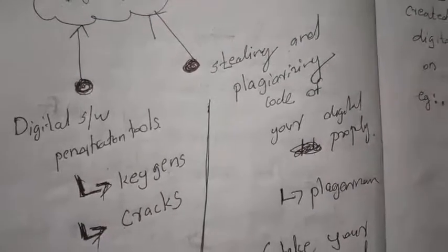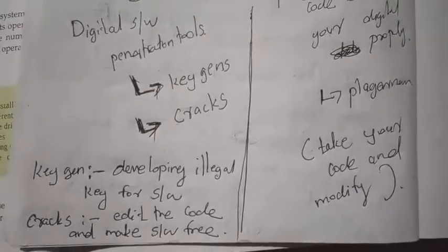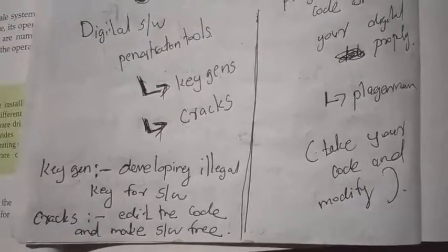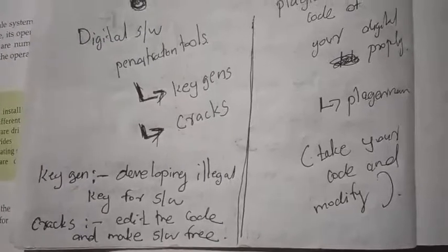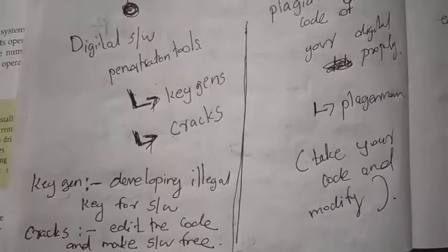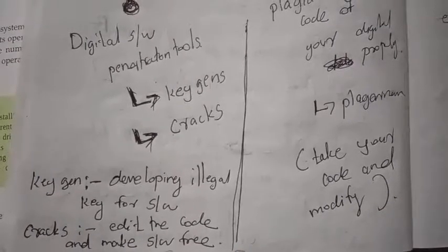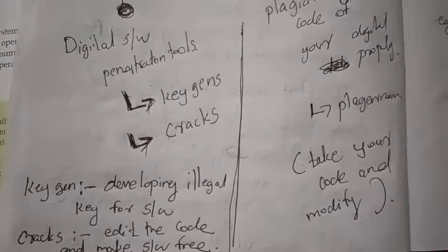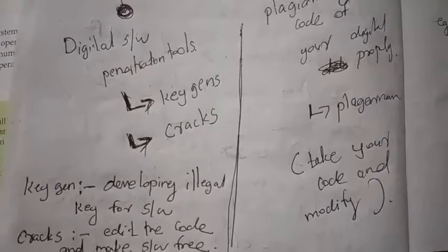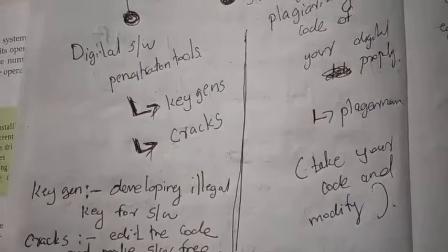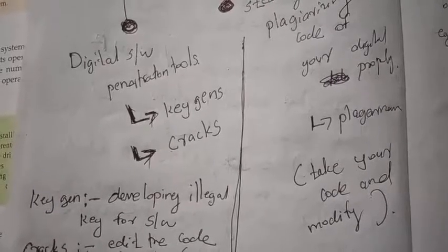A key generator works like this: when you install software, there is a license key required. After some months that key expires and you need to buy a new key online. Hackers use key generator software to develop an illegal key and use that software without purchasing. This is a threat to our digital property — developing illegal keys using key generator software.